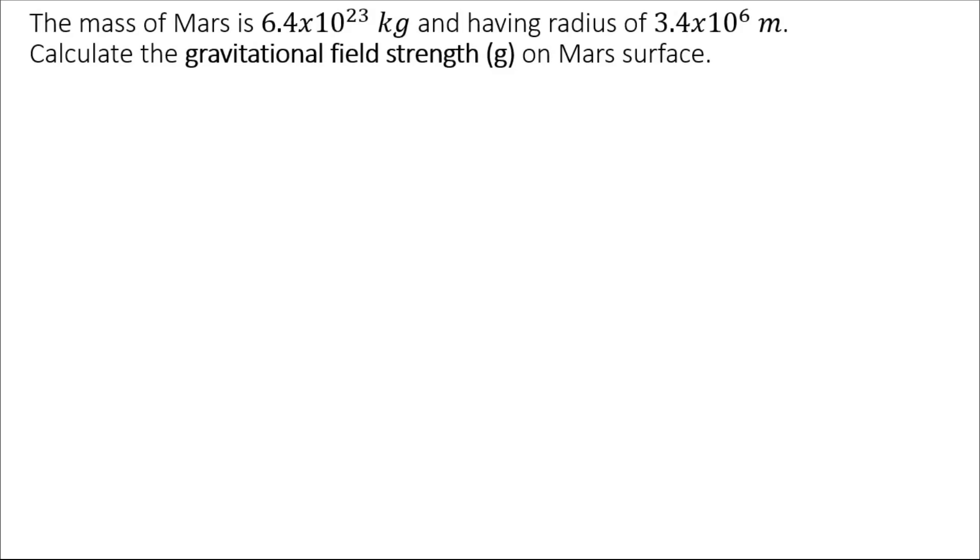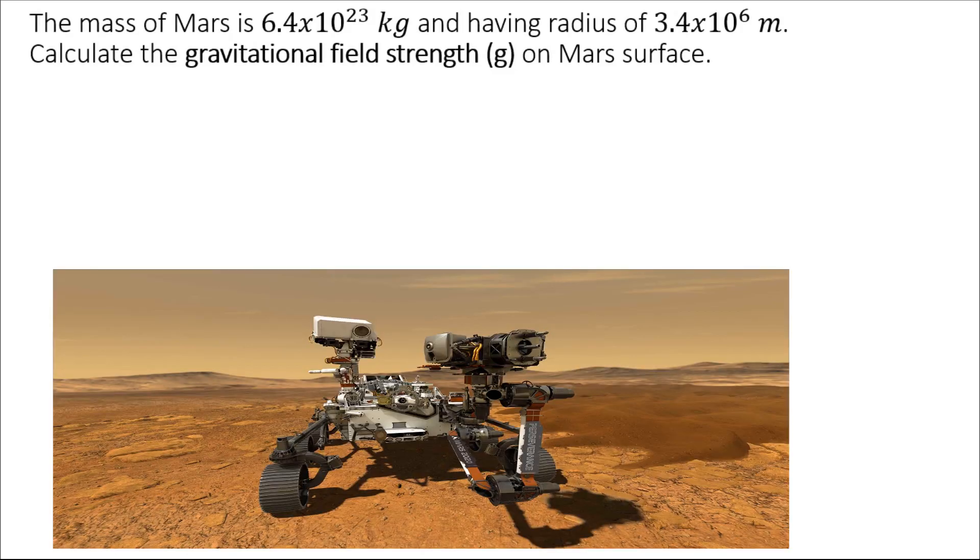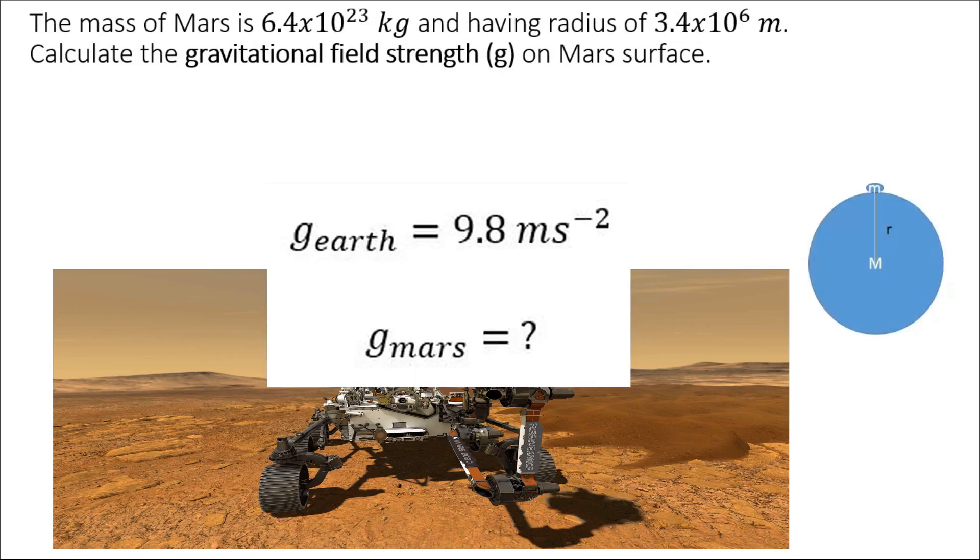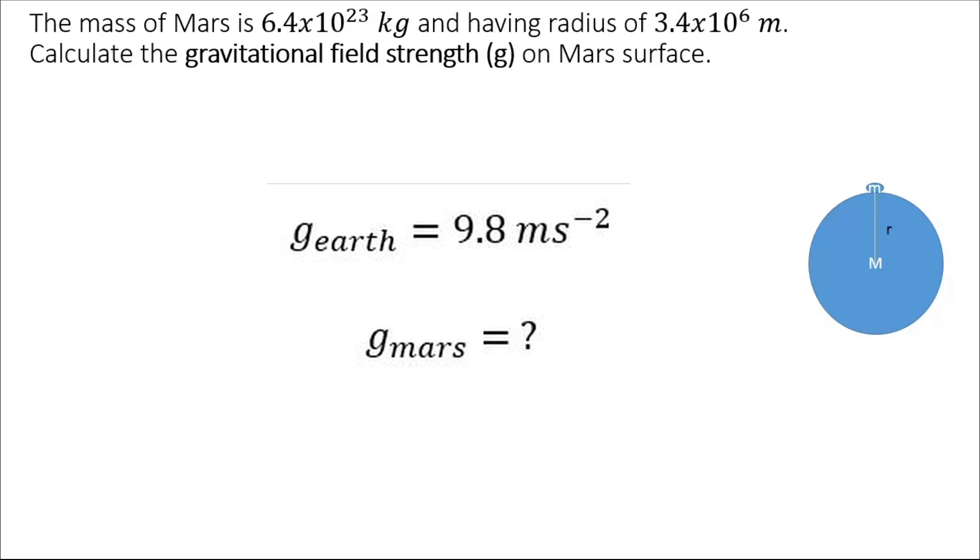Hello everyone, today we are going to learn how to calculate the gravitational field strength on the surface of Mars. We know that the gravitational field strength on the surface of Earth is equal to 9.8 meters per second squared.